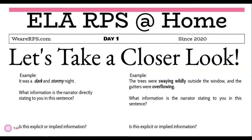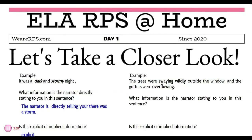We have two examples to look at to see the difference between explicit and implied information. In example one, the sentence says: 'It was a dark and stormy night.' The narrator is directly telling you there was a storm — they are not helping you guess, they are directly stating it. So this information is explicit.